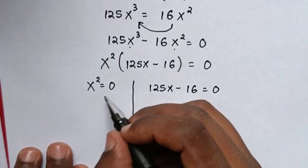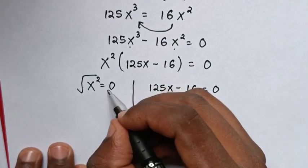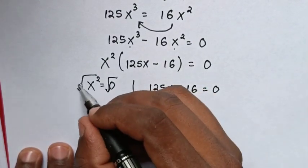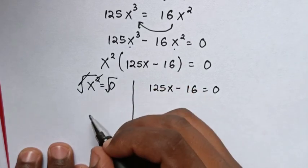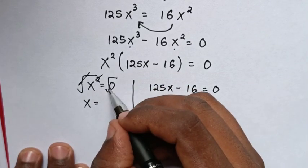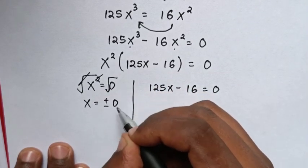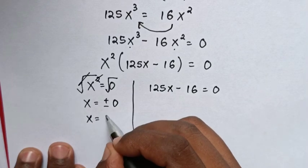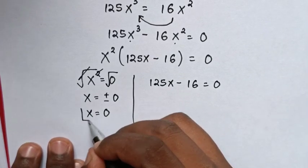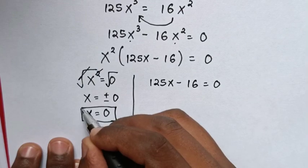From here we apply square root in both sides. This square root will cancel with square, then x is equal to plus or minus 0. Therefore x is equal to 0. So this is one of the values of x.